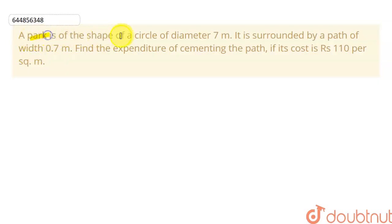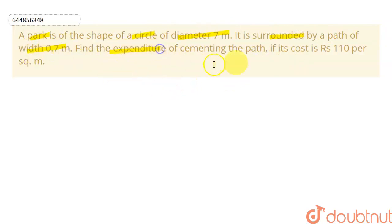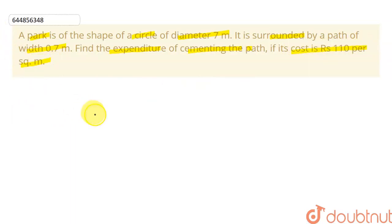In this question, we have given that there is a park in the shape of a circle which has a diameter of 7 meters, and it is surrounded by a path of width 0.7 meters. We need to find the expenditure of cementing the path at the cost of rupees 110 per square meter.